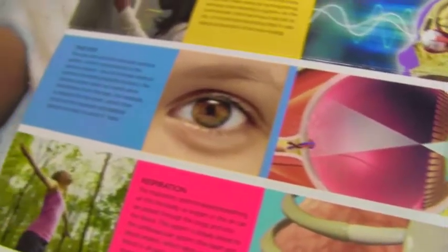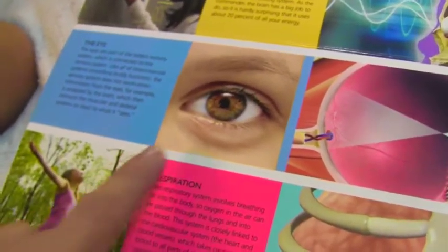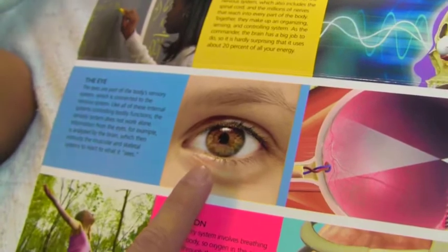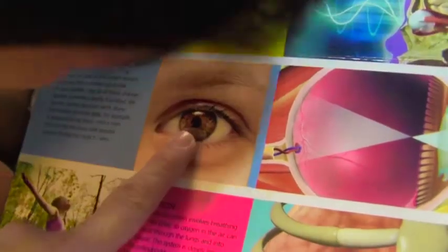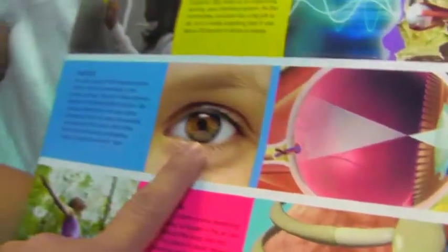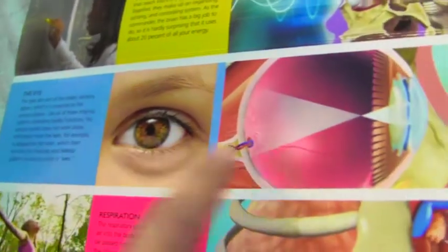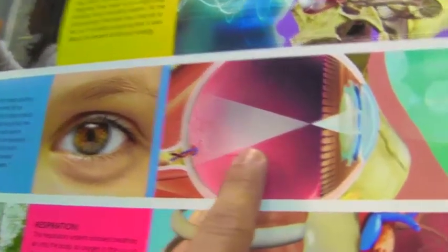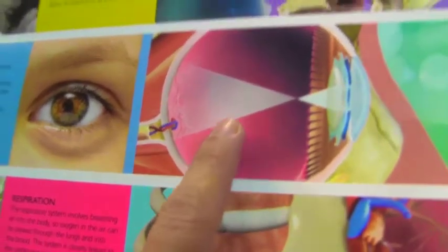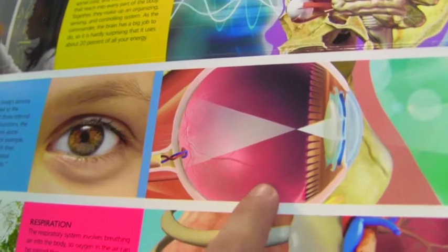In the skull, in the head, there are also eyes — two eyes. It shows here one eye. This shows you what's inside the eye. How many eyes do you have? One? No — two.